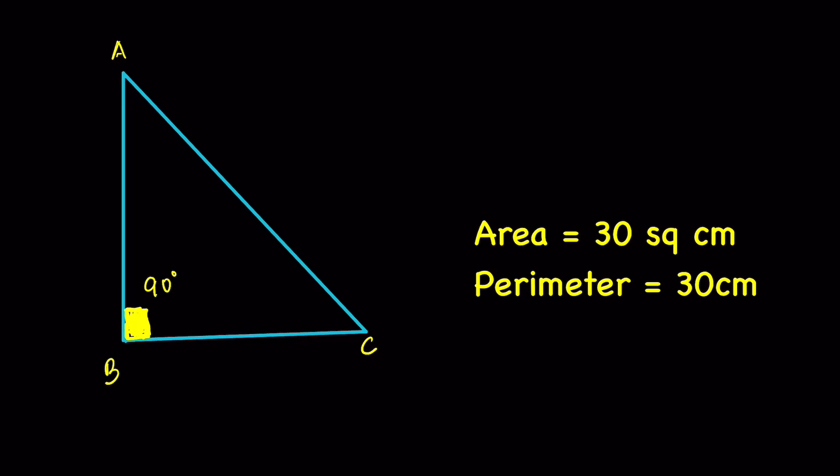Given here is a right-angled triangle in which the area of the triangle is 30 square centimeters and the perimeter is 30 centimeters. We have to find the sides.